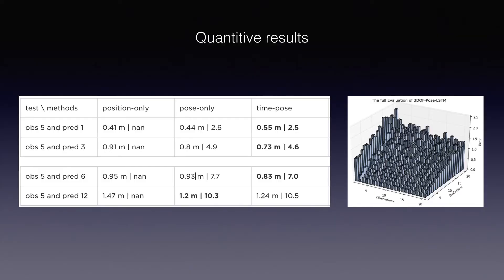Our approach utilizes the correlation between different sources of input and is able to predict more information without losing accuracy. For longer-term prediction, our LEARN model incorporates short-term observation and long-term spatiotemporal context, which makes longer-term prediction more accurate.